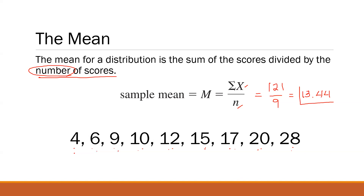Therefore, we can say that 13.44 is a number that represents the entire distribution. That is the average of these numbers — one number that can represent all of them. So that's for the mean. One downside of computing the mean is that if you're dealing with many numbers, it takes a lot of time to compute.